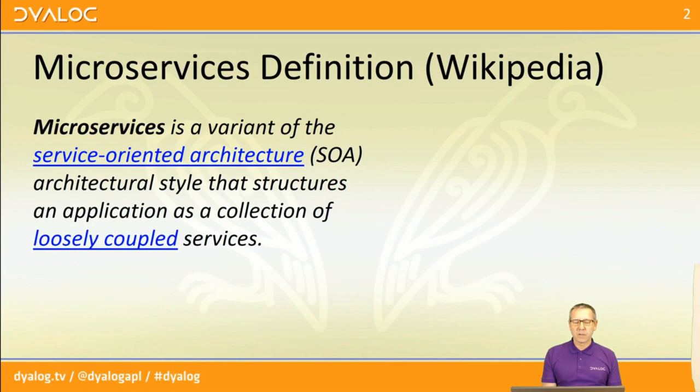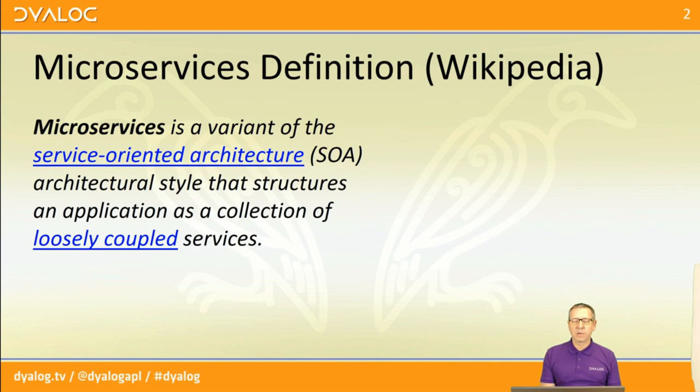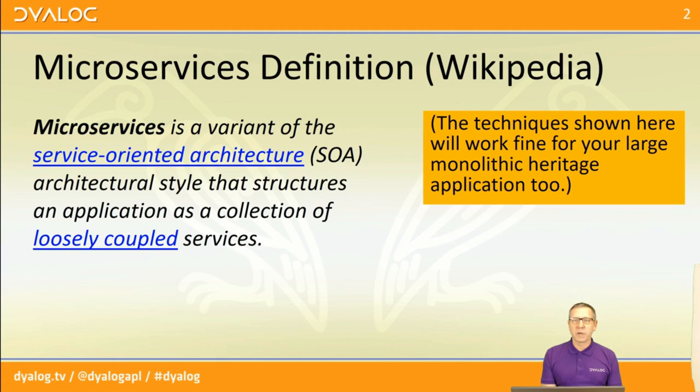The definition says microservices are a variant of service-oriented architecture that structures an application as a collection of loosely coupled services. So instead of having your large monolithic application running on a desktop, you turn it into a bunch of small processes running independently that offer functions up to each other to call. The good news is that all of the techniques we're going to look at today will work fine for your monolithic heritage application as well — they're not really specific to microservices.